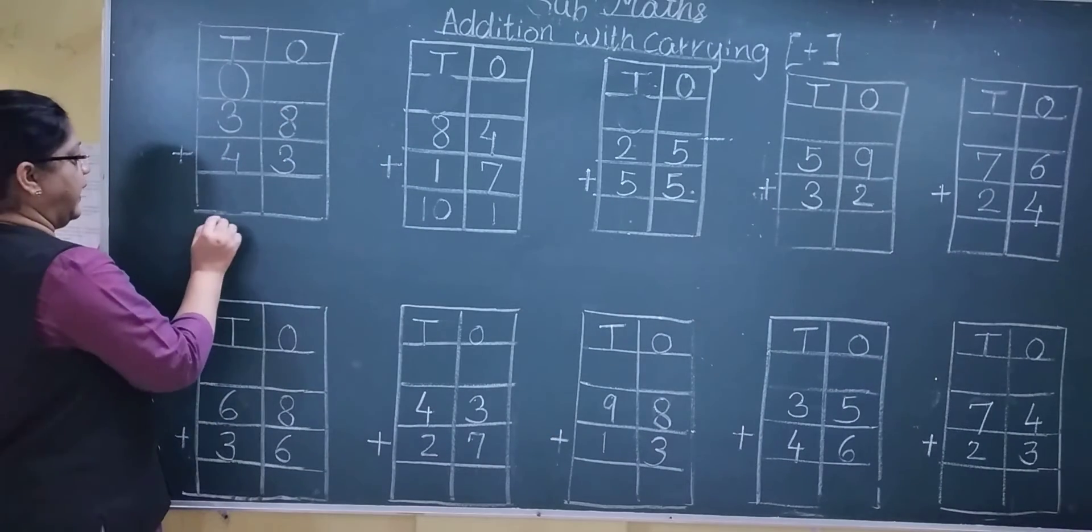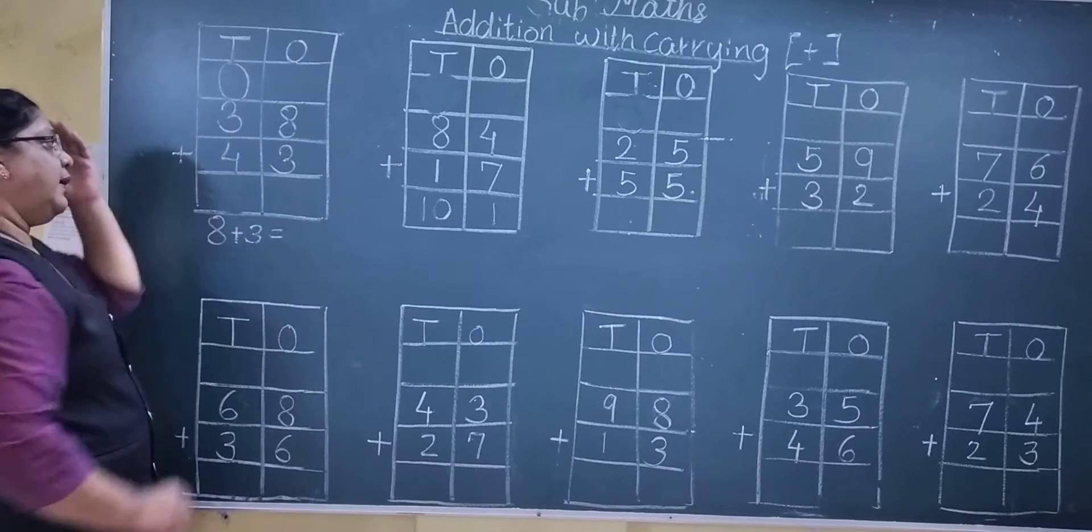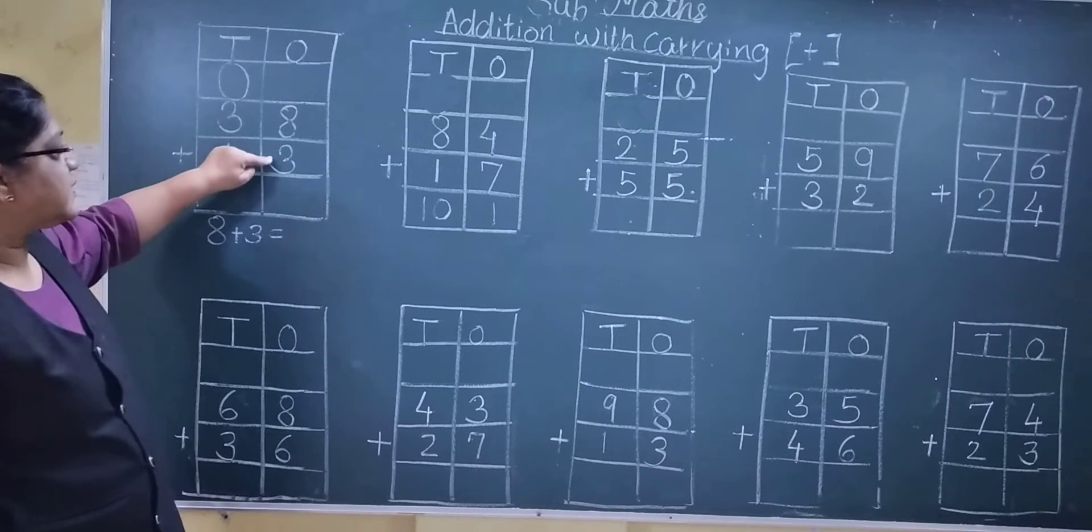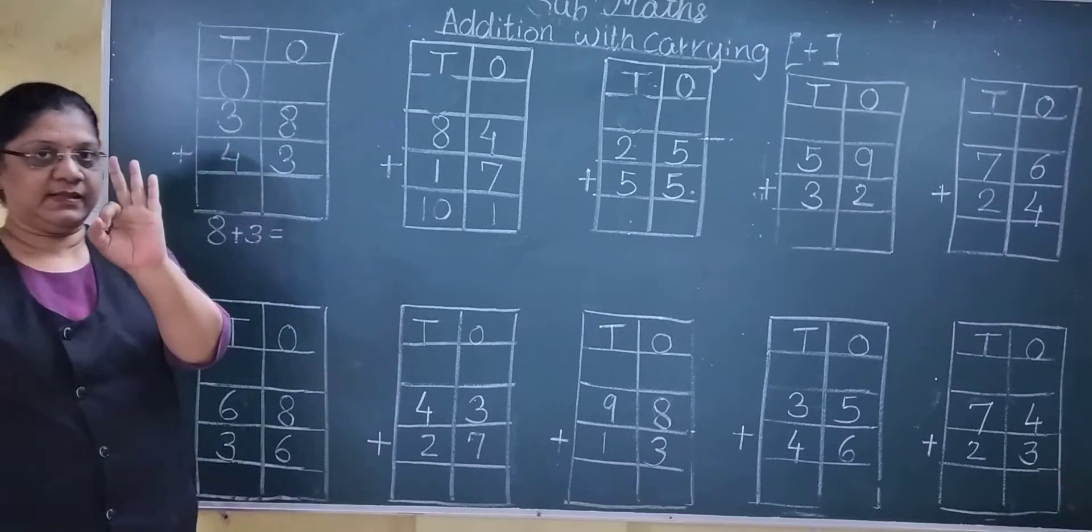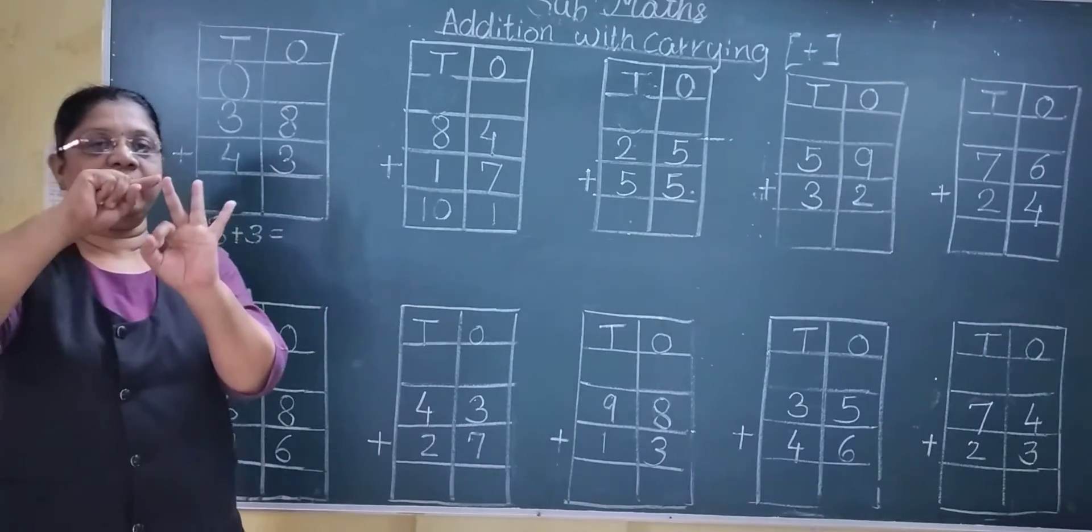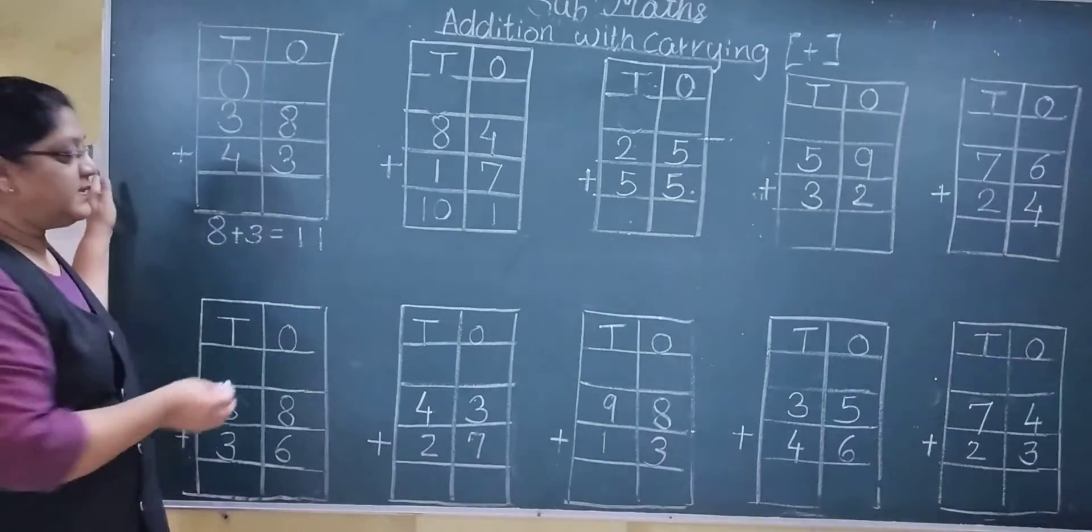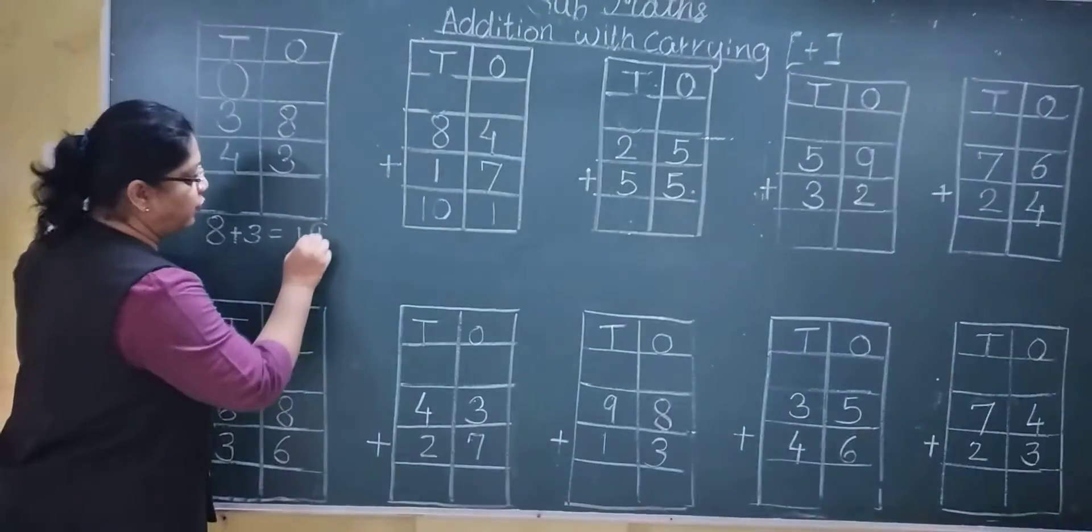See ones, 8 plus 3. You just show your 3 fingers and count after 8. After 8, 9, 10, 11. See 11. Then see, 1 ten and 1 one.